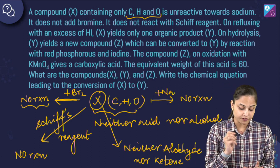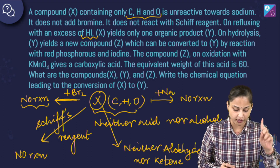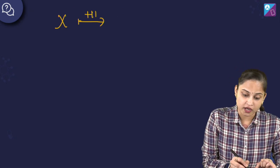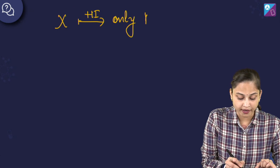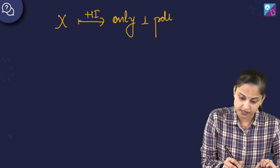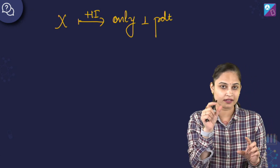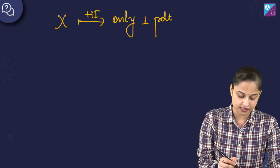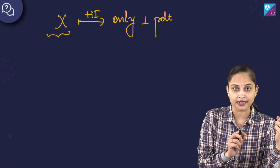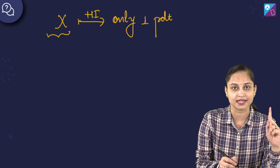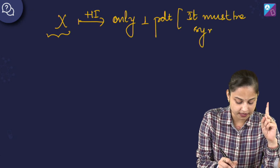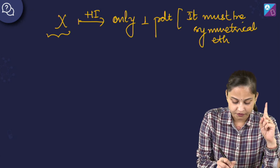On refluxing with an excess of HI, compound X yields only one organic product, Y. Since it's giving only one product and we are on the ether side, that means the compound needs to be a symmetrical ether. If X reacts with HI and we get only one product, it must be a symmetrical ether.